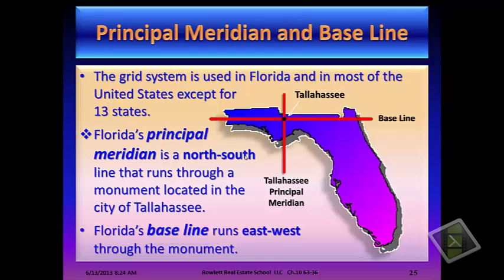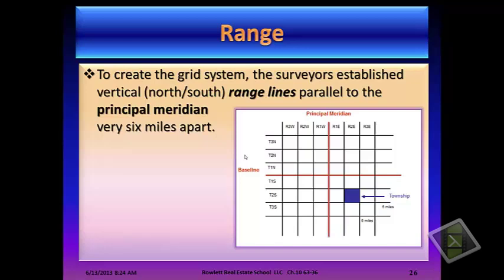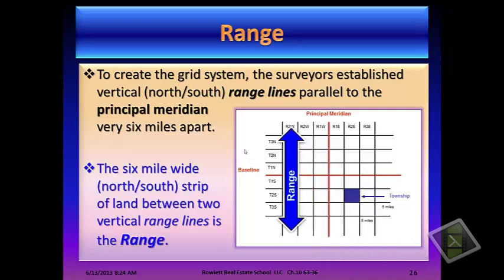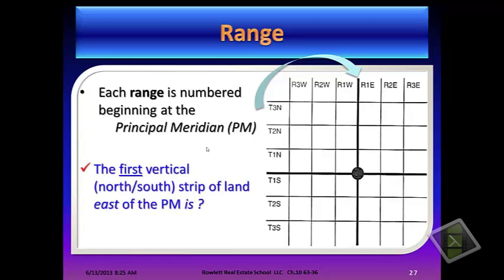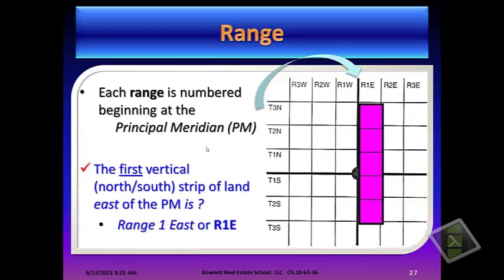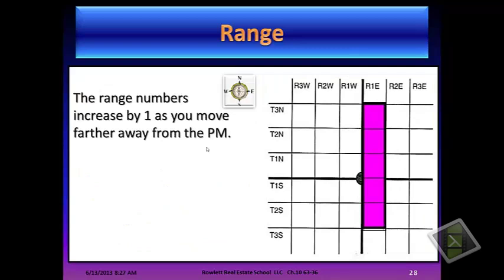Florida's baseline runs east and west through that same monument. To create the grid system, surveyors established vertical north and south range lines parallel to the principal meridian every six miles apart. The six-mile wide north and south strip of land between two vertical range lines is the range. Each range is numbered beginning at the principal meridian, and the first vertical north-south strip of land east of the principal meridian is range 1 east, or R1E. The range numbers increase by 1 as you move further away from the principal meridian.